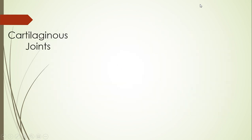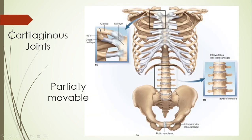Then we get to cartilaginous joints. A cartilaginous joint is a partially movable joint — there's a small range of motion that occurs. Examples of this exist between your ribs and your sternum. It might not seem that there is movement occurring, but remember you are breathing in and out and you need your rib cage to be able to expand and contract.